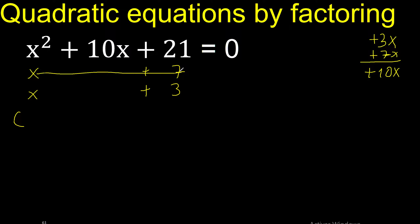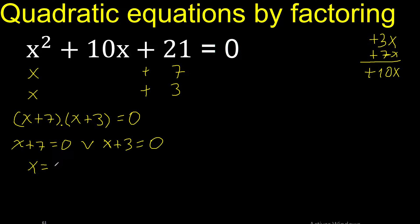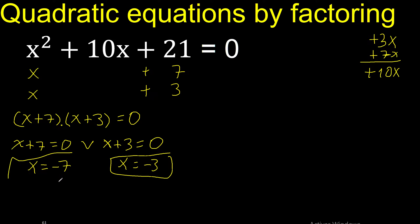Therefore the factored form equals 0. By the zero product property, this equals 0 or this equals 0. Change the sign, change the sign. Finish.